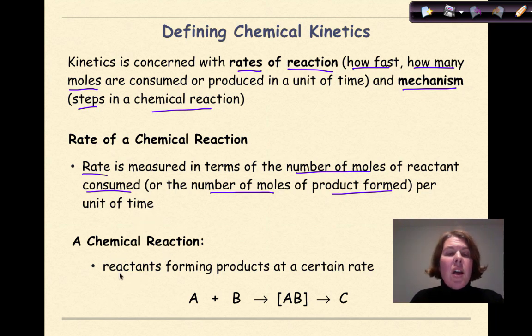A chemical reaction is when reactants are forming products at a certain rate. So here our reactants A plus B form this, what we're going to know as an intermediate, to form a single product of C.